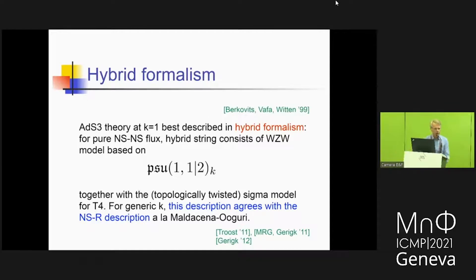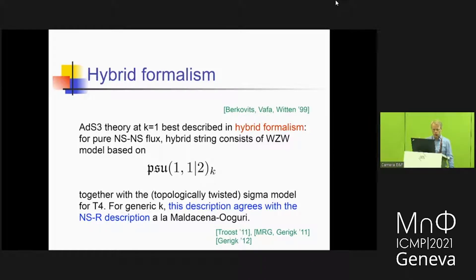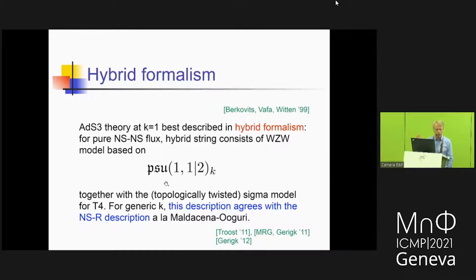ADS3 cross S3 is best described at level 1 in terms of this hybrid formalism, going back to Berkovits, Vafa, and Witten. What they argued for is that this string background is described in terms of this super-Lie algebra Wess-Zumino-Witten model at level K, together with a topologically twisted sigma model for T4, with a cohomology to characterize the physical degrees of freedom. We'll just work with this model at K=1. K=1 is the regime of smallest radius, so it's most likely to correspond to tensionless strings.